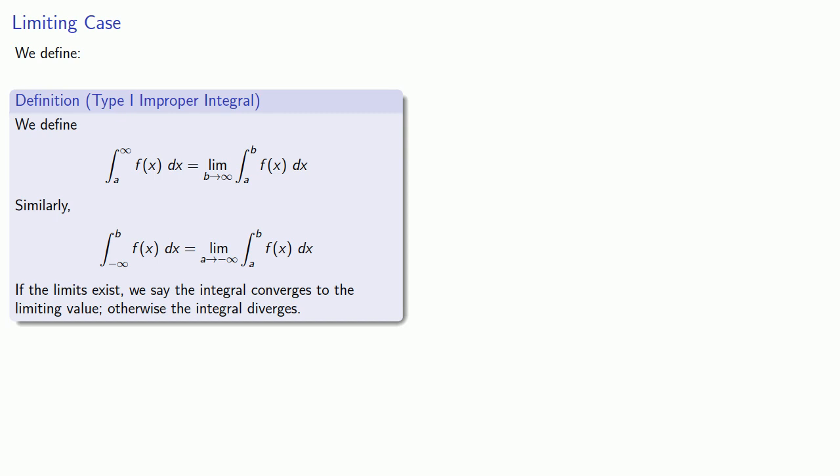And we'll make a similar definition. If our lower limit is minus infinity, it'll be the limit as a goes to minus infinity of our definite integral. And because these are now defined as limits, we must contend with the possibility that these limits don't exist. So if these limits exist, we'll define the integral as having the value of the limit, and we say that the integral converges to the limiting value. Otherwise, we'll say that the integral diverges.